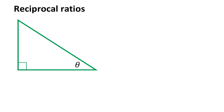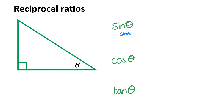Now in order to find the reciprocal ratios, we need the original ratios we learned. Those three ratios are sine of theta, cos of theta, and tan of theta. Remember, we only write down the first three letters of the names of the ratios. Sine's full word is sine, cosine is like this, and tan stands for tangent.